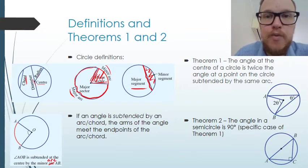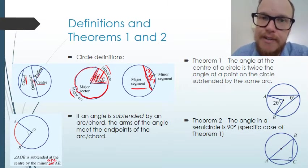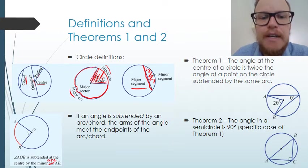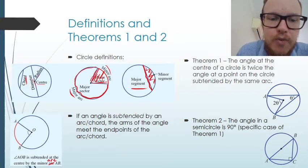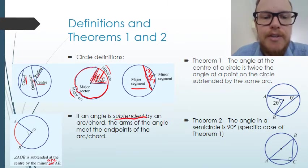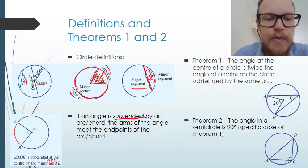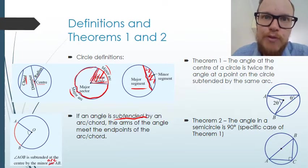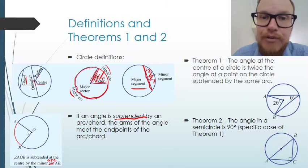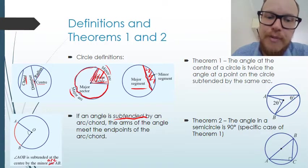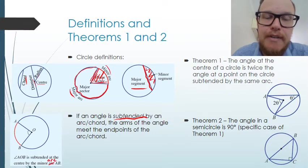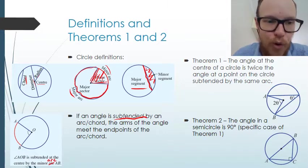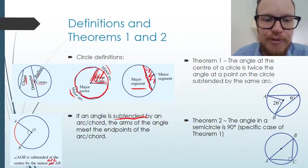Another word we need to understand is 'subtended'. The word subtended talks about the relationship between an angle inside the circle from the radius and a point on the circle, an arc on the circle, or a chord made inside the circle.